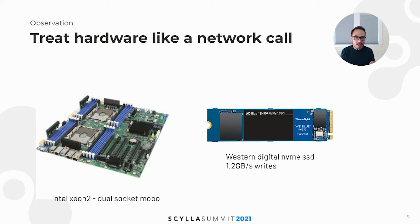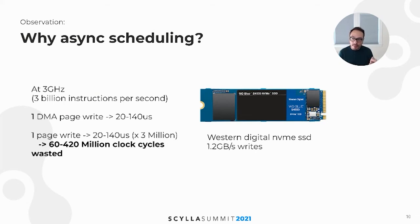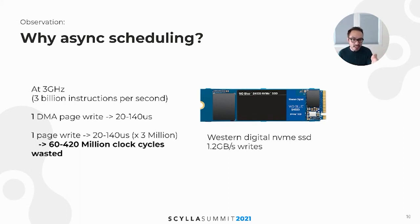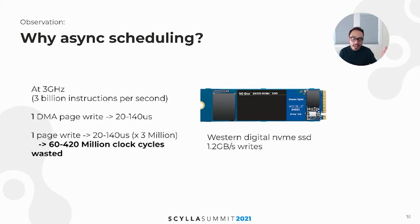The intuition behind Sistar and the reason for leveraging these modern hardware advances is really to treat everything like an asynchronous network call. For example, assume you have a single core operating at three gigahertz per second — three billion instructions per second. To write a single 4096 bytes to disk on an NVMe SSD Western Digital device, it takes anywhere from 20 to 140 microseconds. If you use a synchronous programming model, you've wasted anywhere from 60 to 420 million clock cycles — just gone. This kind of latency bubbles up when you're using synchronous calls.